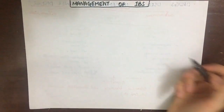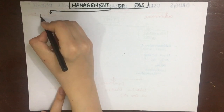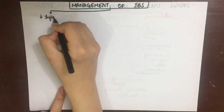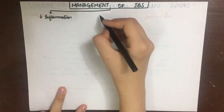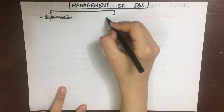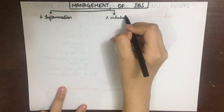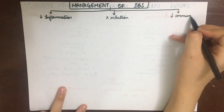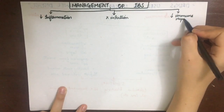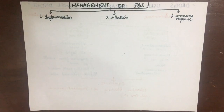The management of inflammatory bowel disease includes three approaches: one is to suppress the inflammation of the gut, second is to prevent any infection, and thirdly to decrease the immune response, because it is an autoimmune disease.